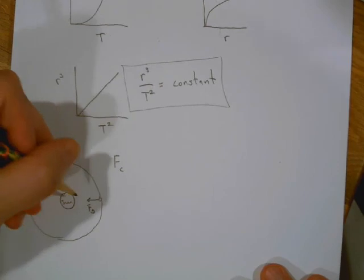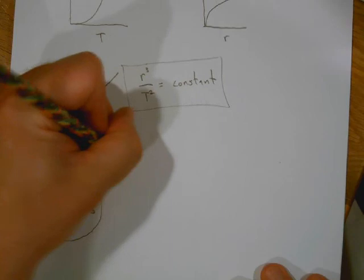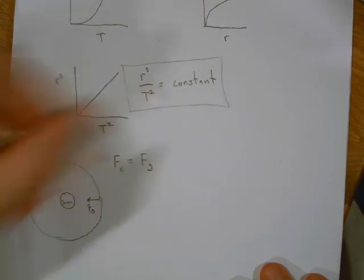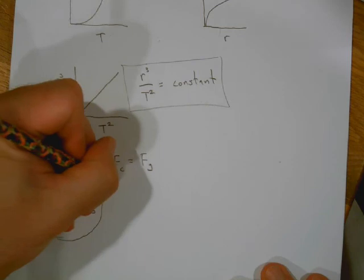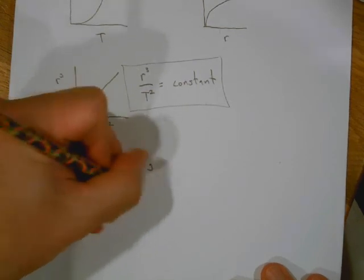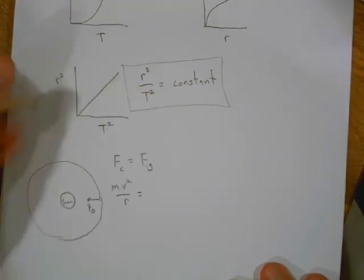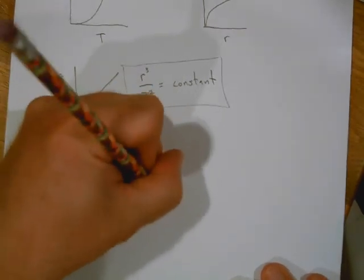If I do my next step, which is to write my equation, I say well my net force, but in this case the net force is really the centripetal force because it's moving in a circle, is equal to Fg because that's the only force acting on it. How do we find centripetal force? We say mv squared over r. How do you find this universally? You go GMm over r squared.